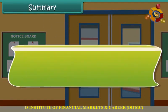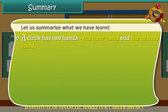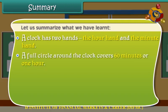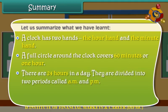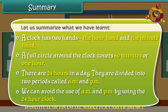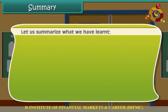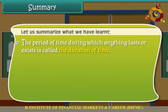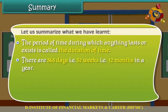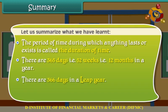Summary. Let us summarize what we have learned. A clock has two hands: the hour hand and the minute hand. A full circle around the clock covers 60 minutes or 1 hour. There are 24 hours in a day, divided into two periods called AM and PM. We can avoid AM and PM by using the 24-hour clock. The period during which anything lasts is called the duration of time. There are 365 days, that is 52 weeks, that is 12 months in a year. There are 366 days in a leap year, and February has 29 days in a leap year.